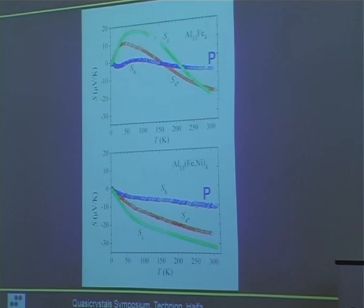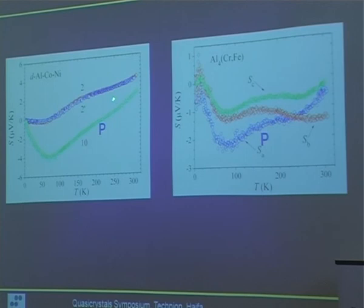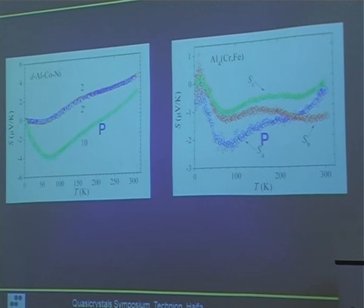For comparison, thermopower of the pure compound Al13Fe4 versus the disordered nickel-doped version shows little resemblance. No unambiguous conclusions about quasicrystal properties can be drawn from thermopower. The closest compound in thermopower behavior to the decagonal Al-Co-Ni is Al4-Cr-Fe: in both cases thermopower is very small and shows some similar properties, but there is no good explanation for that.